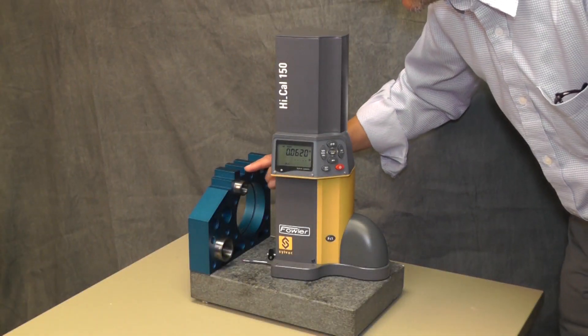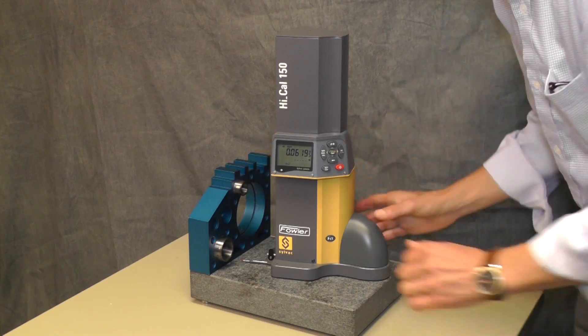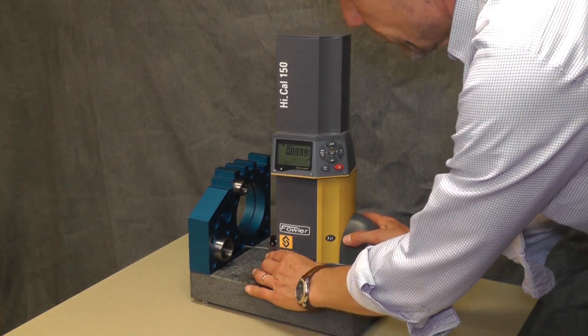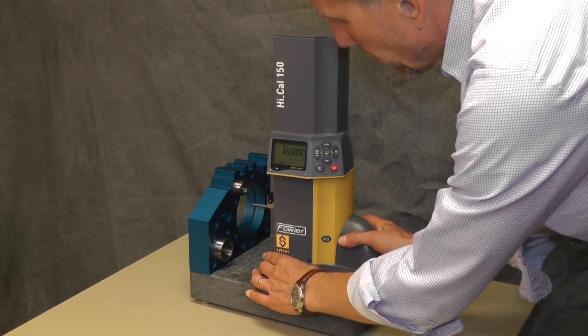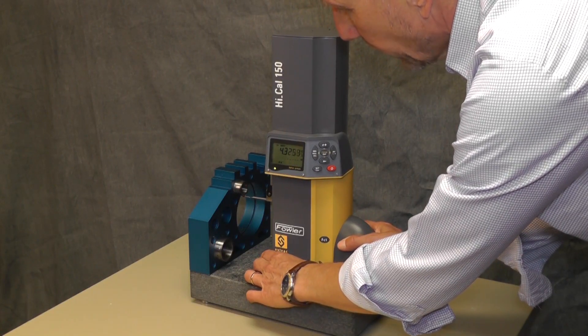Should we need to measure the concentricity between the external and the internal bores? Just proceed as follows. Take the measurement of one of them, it doesn't matter, the external or the internal.